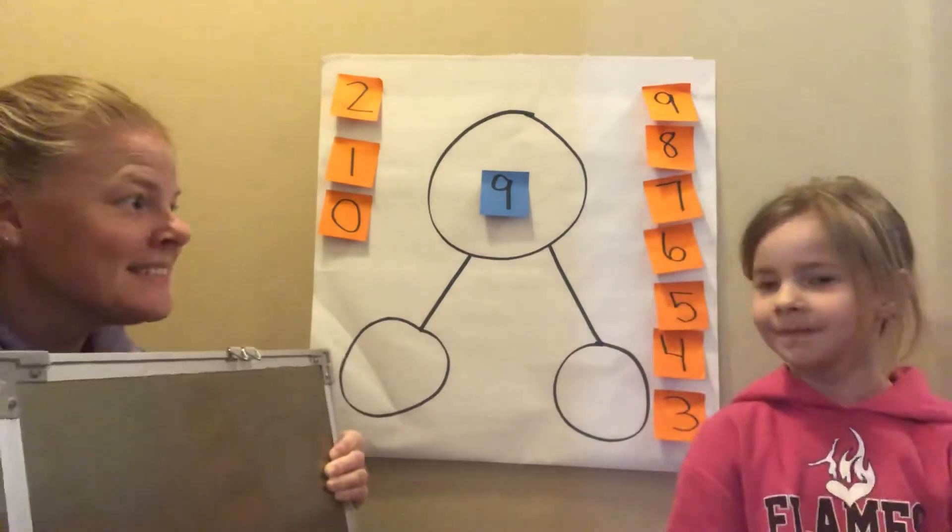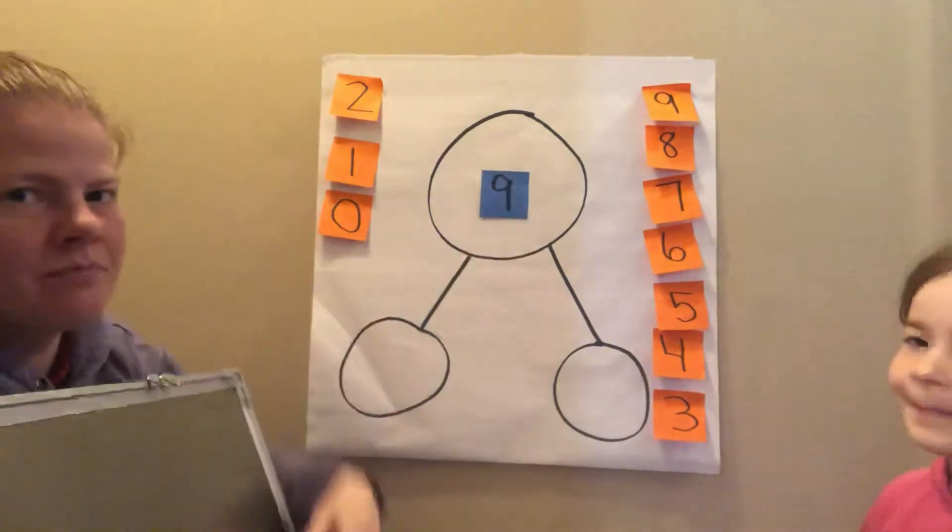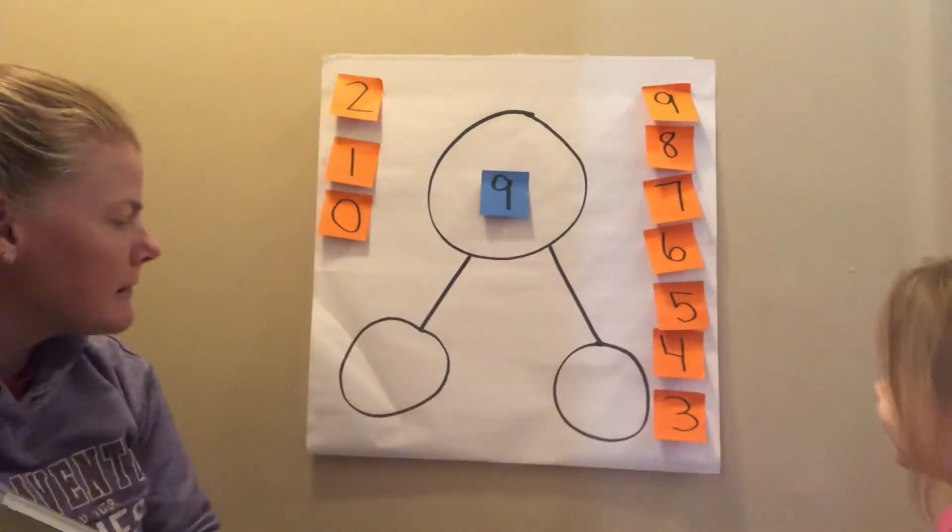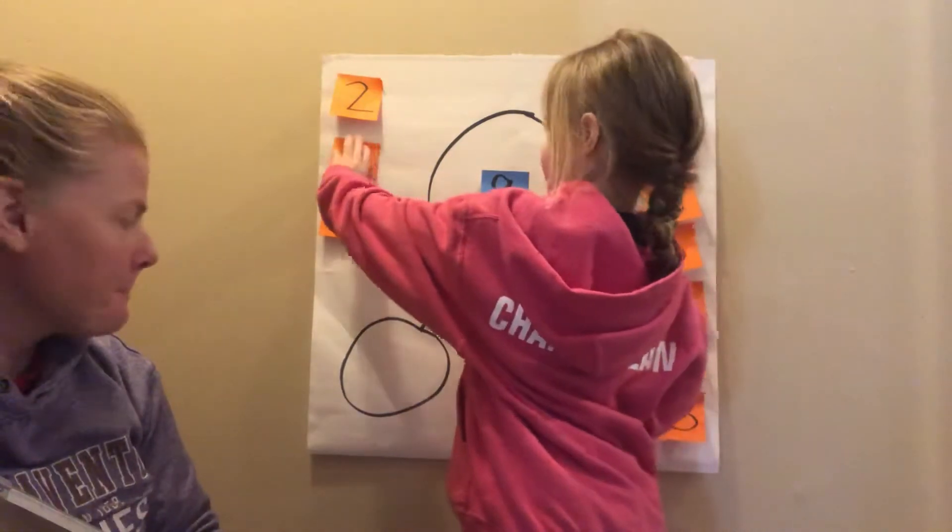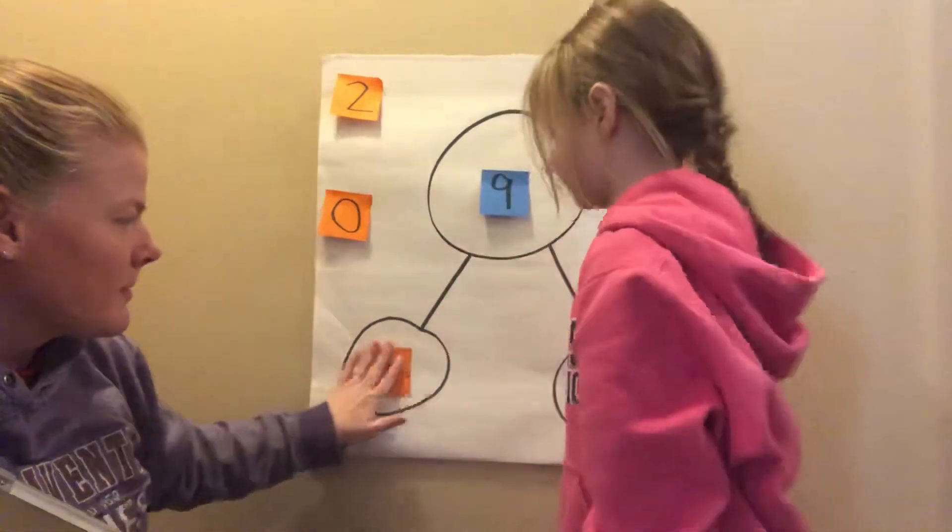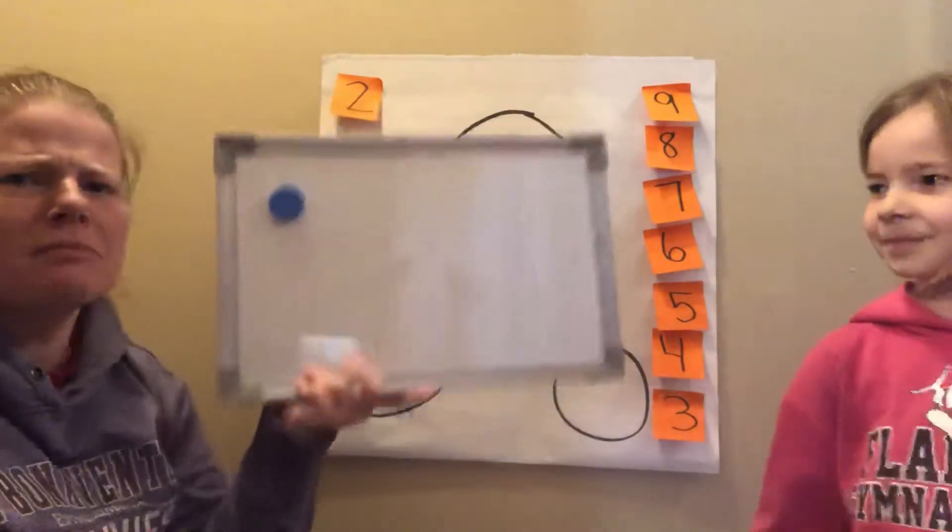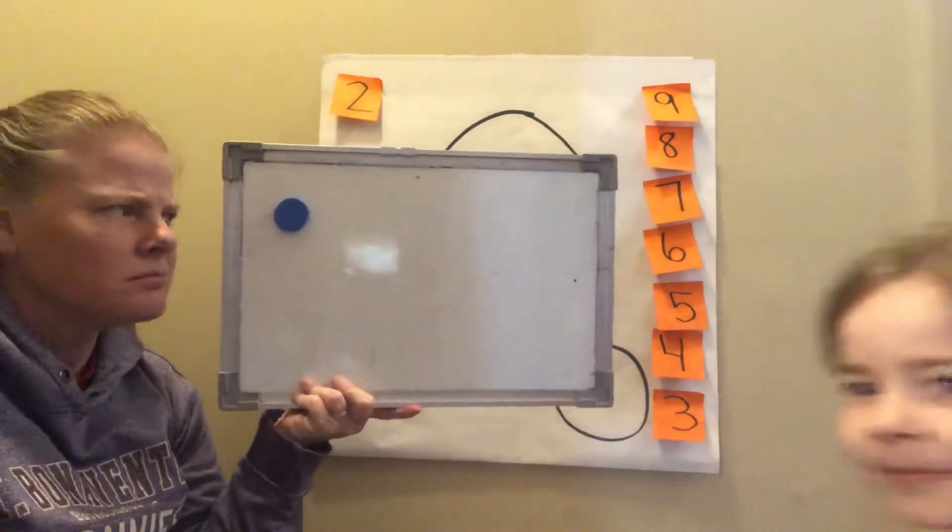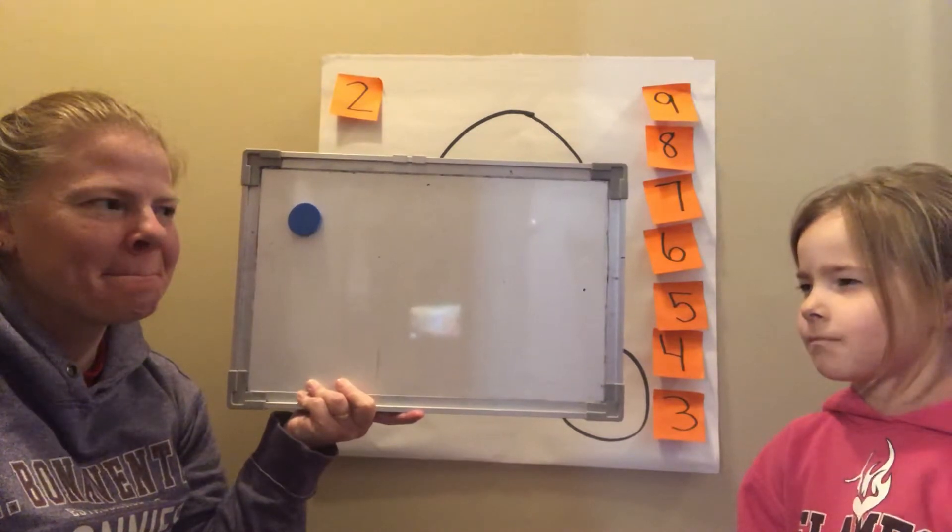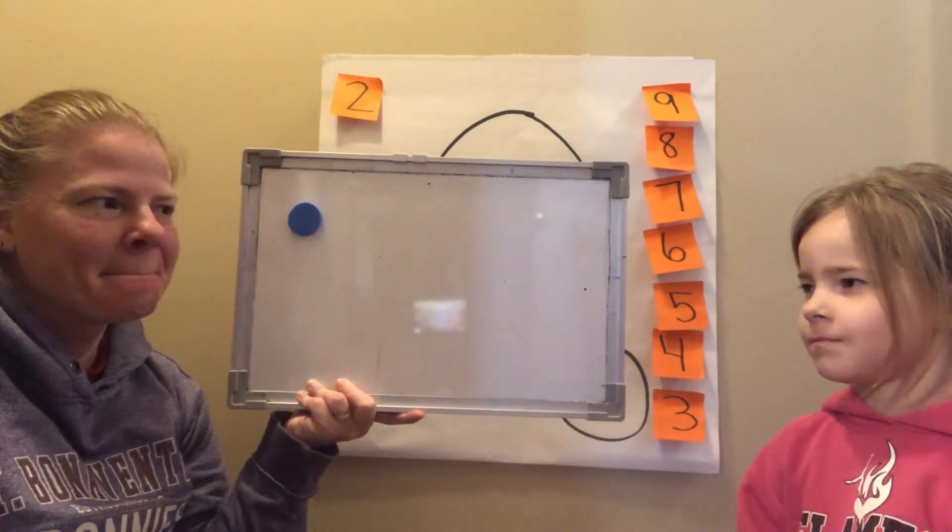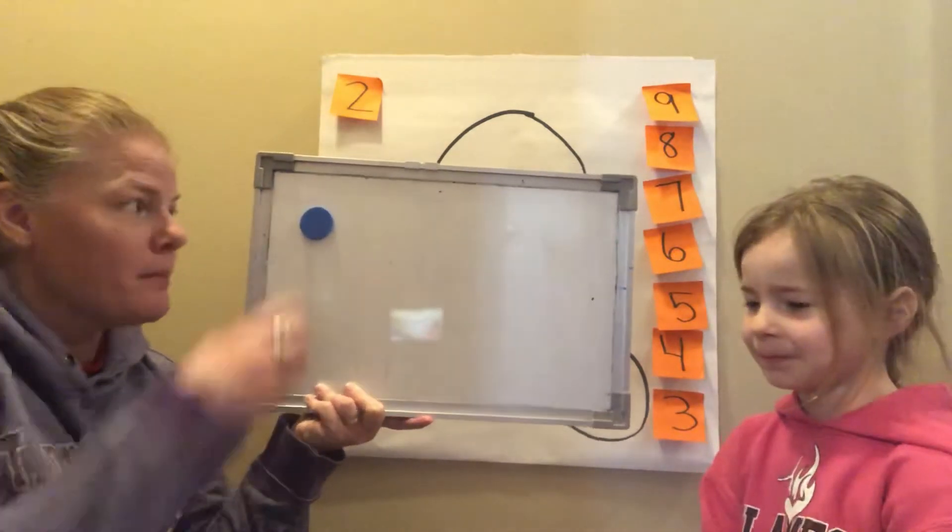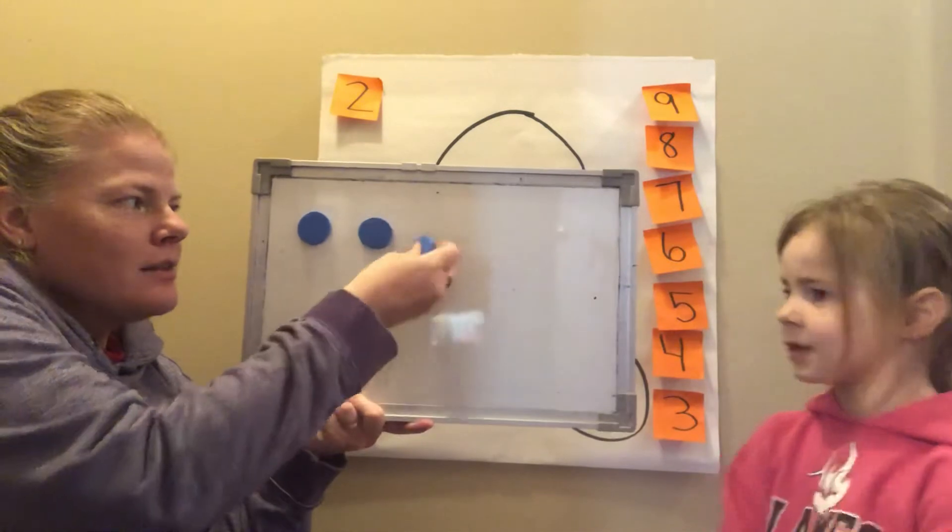Are you ready? So nine's my whole. How many do I have? One. I only have one. So she's gonna put the one up. Nine minus one. How many are in my cup? Eight. She thinks eight. Let's see if she's right. Are you ready? So we have one up here. One, two.